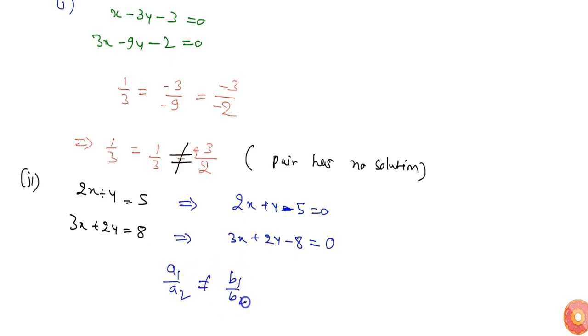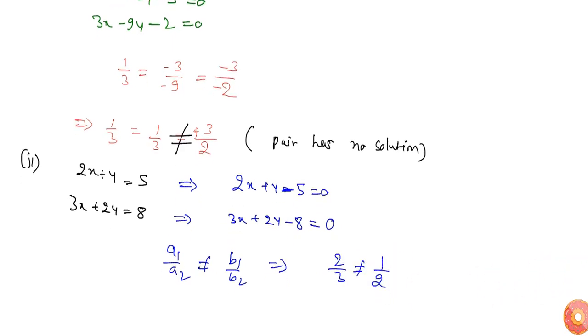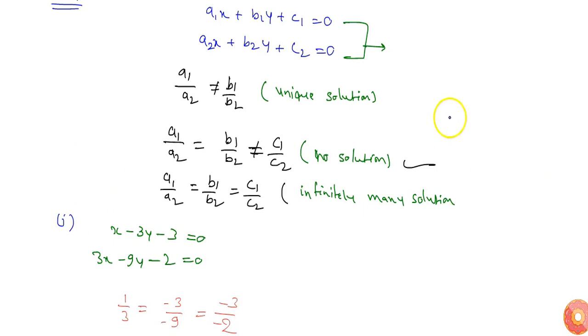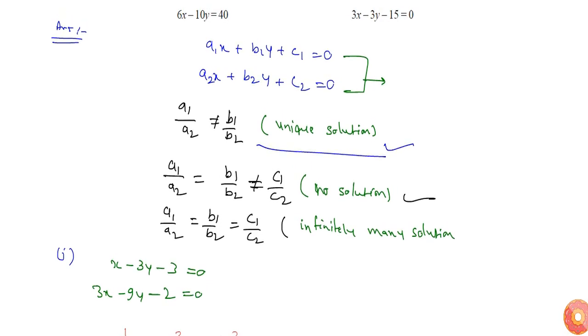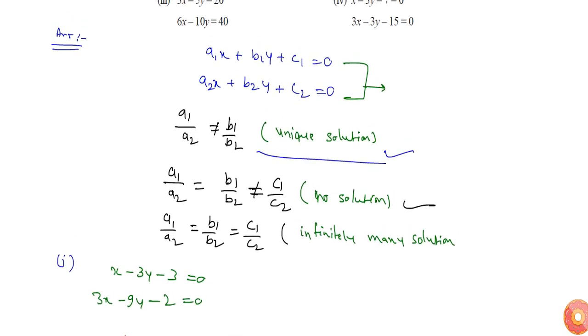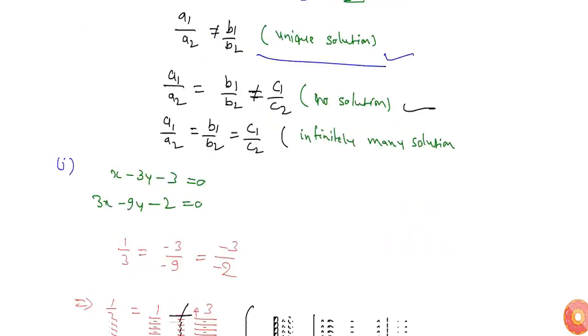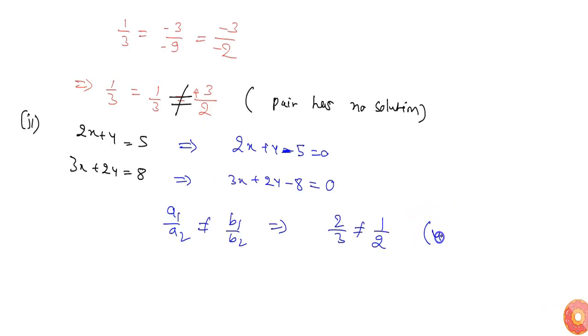So here I can see that a1/a2 is not equal to b1/b2, since 2/3 is not equal to 1/2. So this is similar to form 1, which is when a1/a2 is not equal to b1/b2, then the equation has a unique solution.